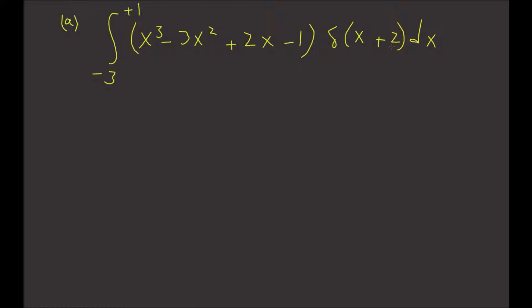Since this number here, the -2, is within our limits -3 and +1, we're just going to take our function—this is our function f(x)—and we're just simply going to evaluate f(-2). Again, it's going to pick that value.